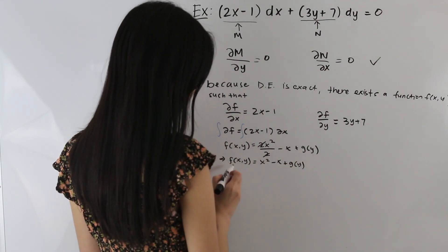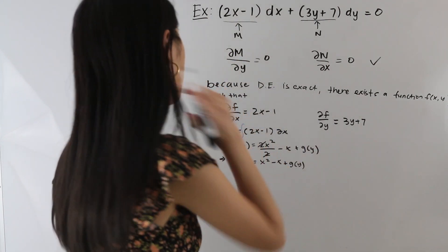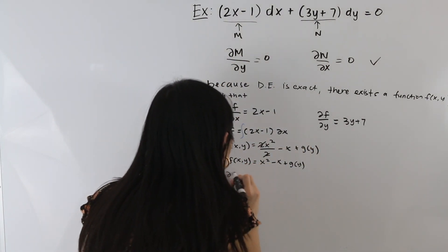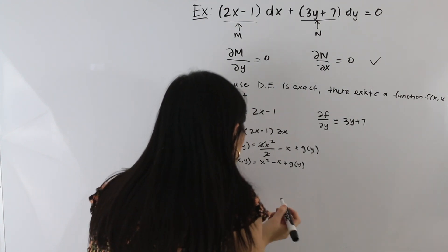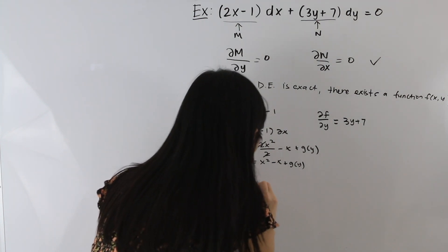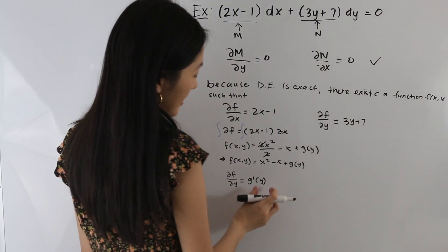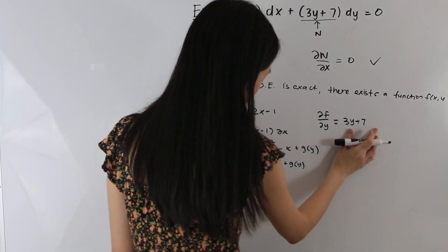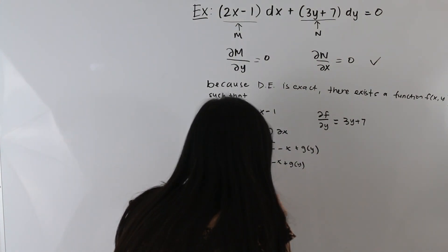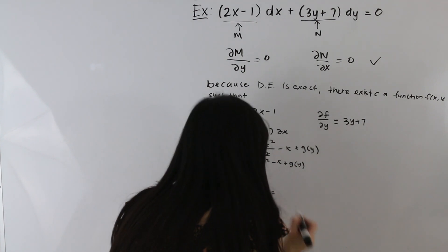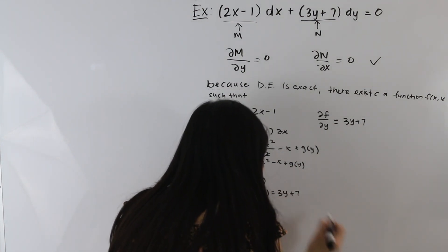Now we're going to take the partial derivative of f with respect to y. That gives us g′(y), and we're going to set this equal to N. So we get g′(y) = 3y + 7.